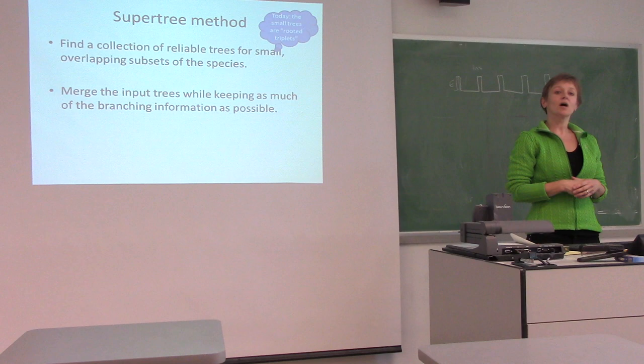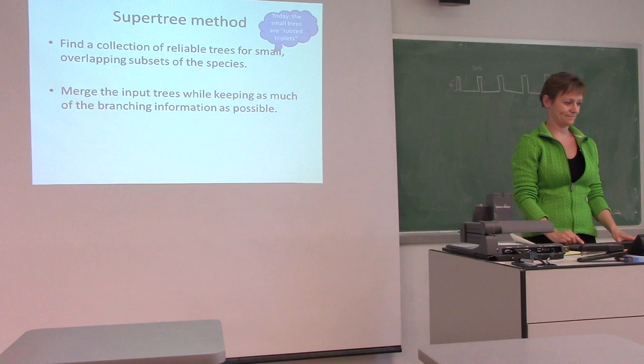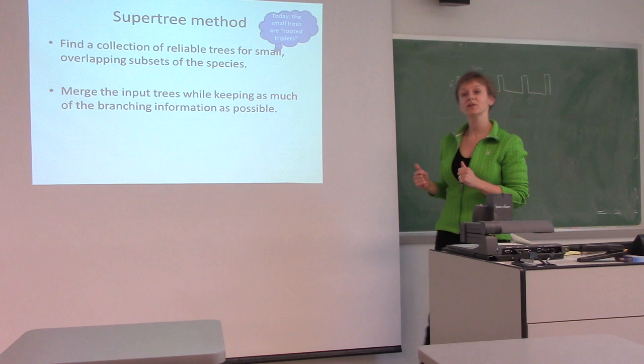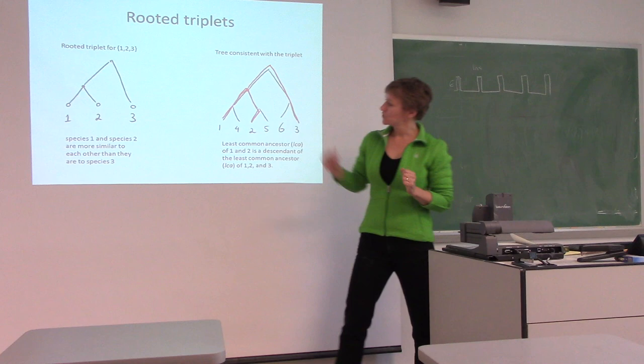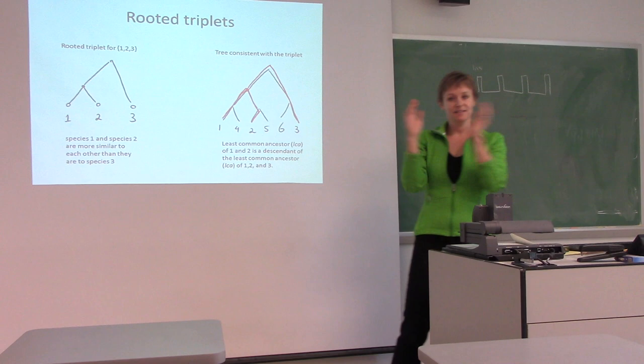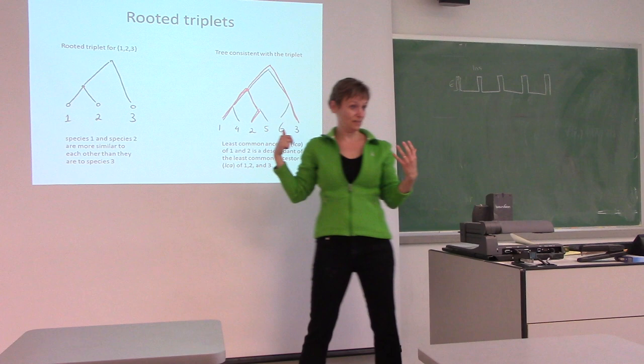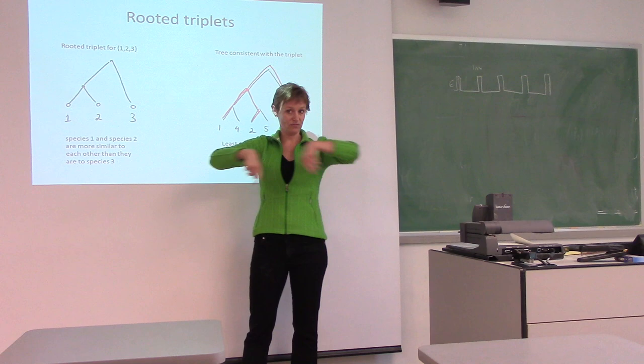In my talk we're going to think of these small trees as being rooted triplets. Here's a concrete example: think of having three species — species one, two, and three. Somehow biologists figured out that species one and two are more similar to each other than species three, so three branched off first, and then later one and two branched off.